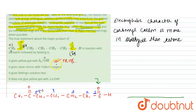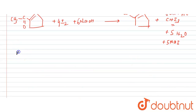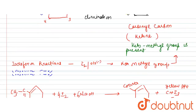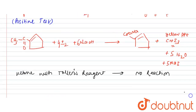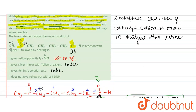Statement 2: it gives silver mirror with Tollens test. This is a false statement. Aldehydes give the silver mirror test, but ketones with Tollens reagent give no reaction. Statement 3: it gives Fehling solution test. This is also false. Ketones with Fehling solution give no reaction. So the compound does not give Fehling solution test either.